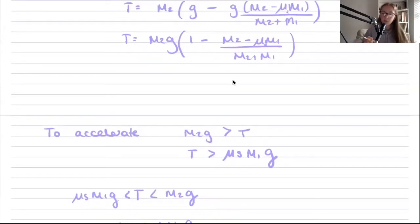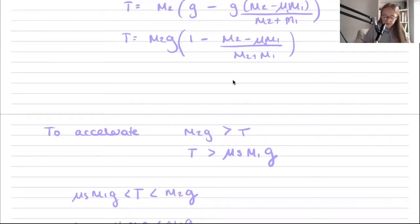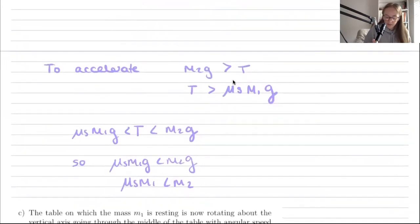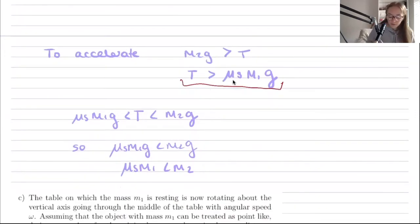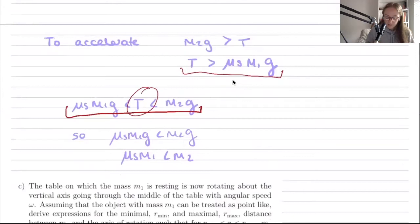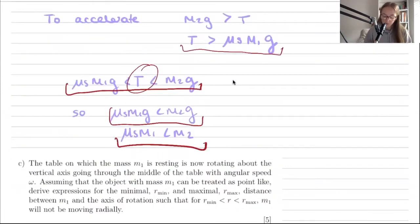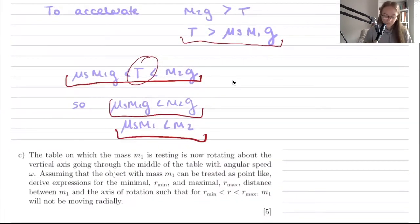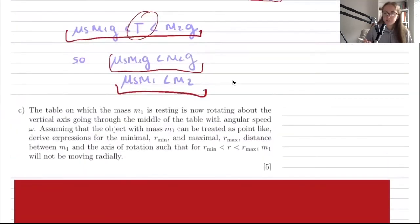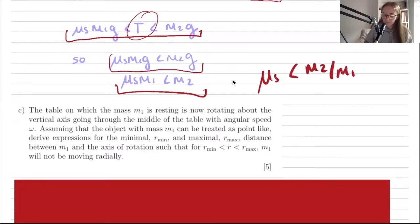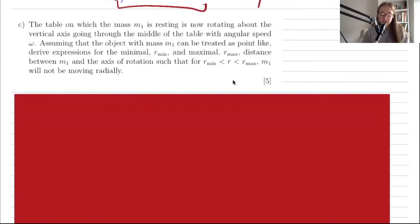For the system to accelerate, m₂'s weight must exceed the tension, and the tension must exceed the static friction on m₁. Combining these conditions and cancelling g gives: μₛ·m₁ must be less than m₂, so the condition is μₛ < m₂/m₁.